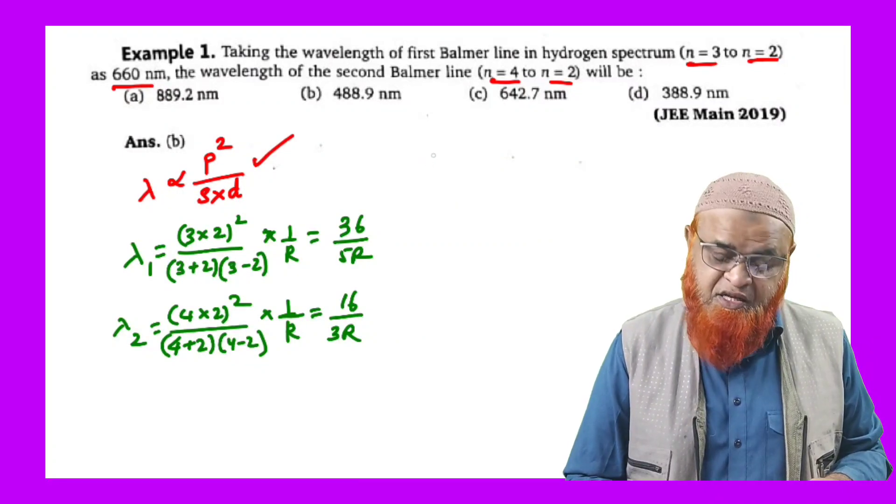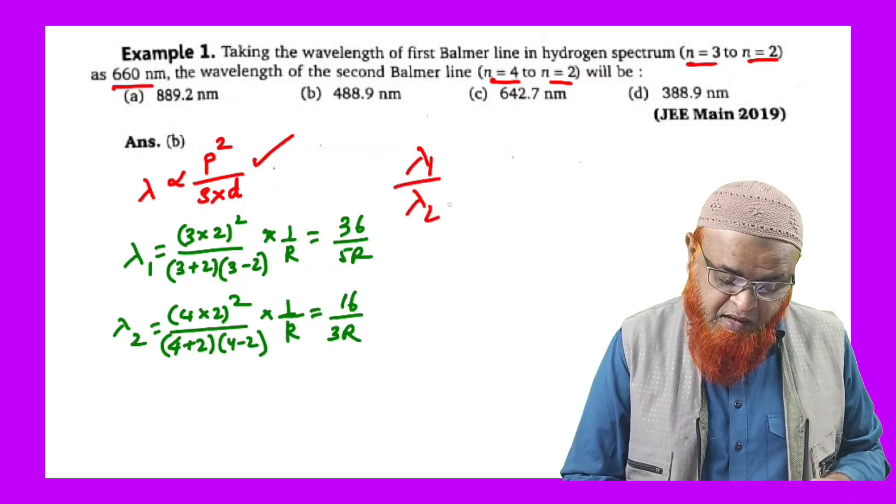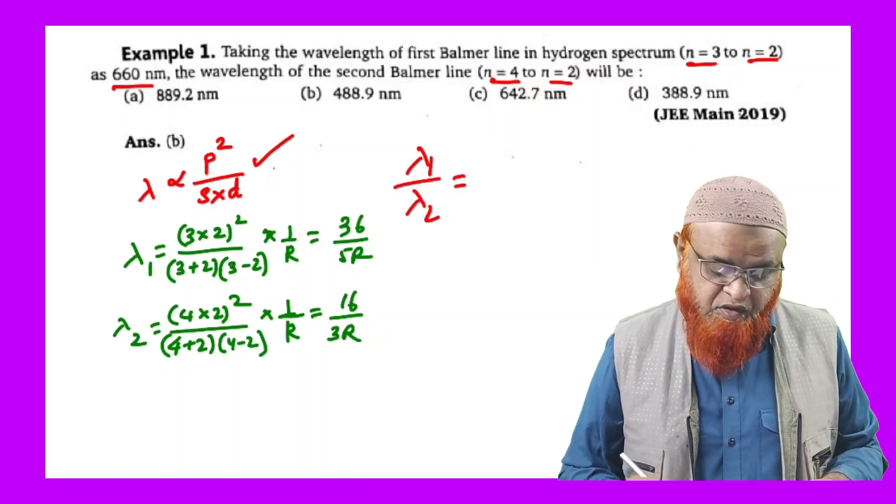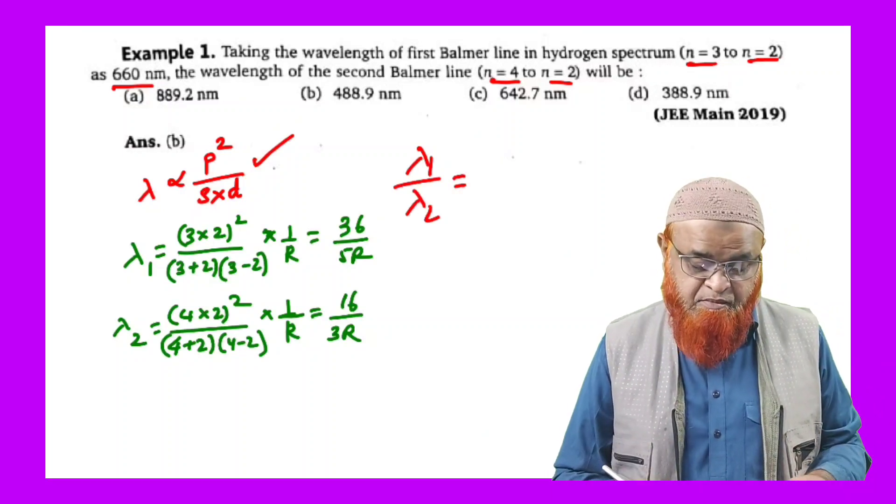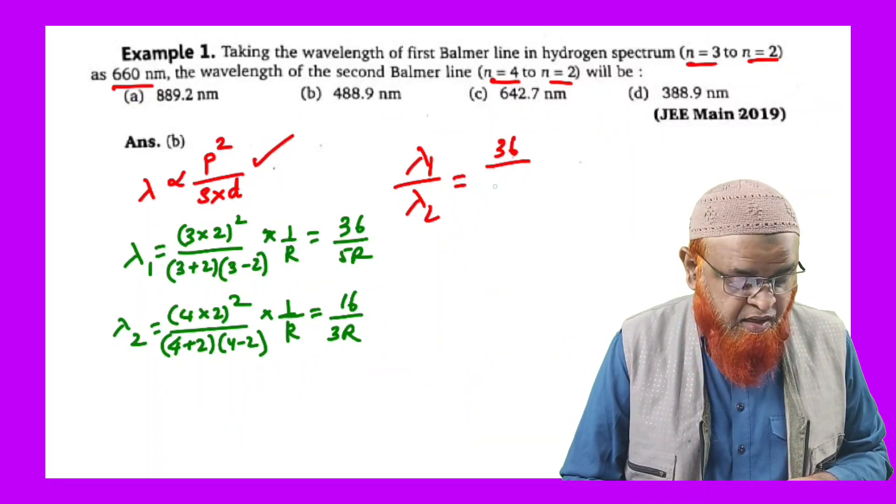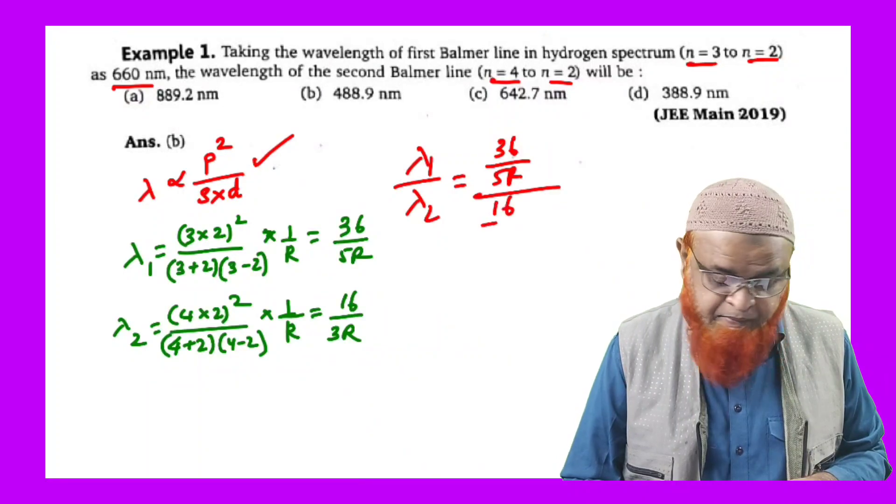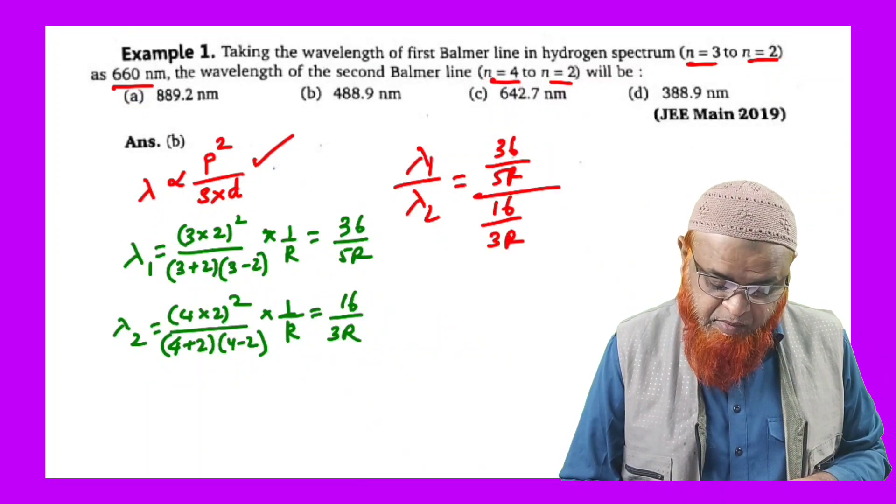Now after that you have to divide these two. That is, you have to consider lambda 1 by lambda 2, which is equal to, after doing the product and the sum, finally you will be getting 36 by 5R divided by 16 by 3R. So because this is a shortcut formula here.